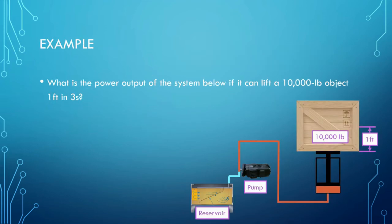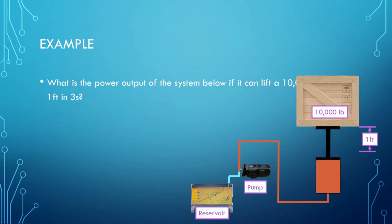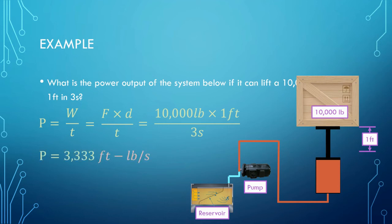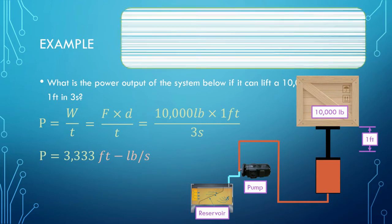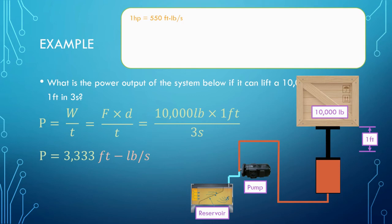Let's see an example. What is the power output of the system below if it can lift a 10,000 pound object one foot in three seconds? Power is equal to work over time, and work can be expanded into force times distance. 10,000 pounds of force times one foot of distance divided by three seconds gives us 3,333 foot pounds per second of power. This unit can be converted into horsepower if we know how many foot pounds per second equals one horsepower. One horsepower equals 550 foot pounds per second. So if we multiply our answer in foot pounds per second by this conversion factor, we get 3,333 horsepower divided by 550 or 6.06 output horsepower.